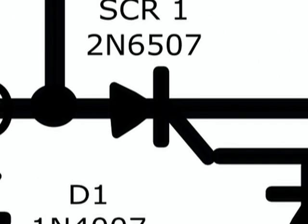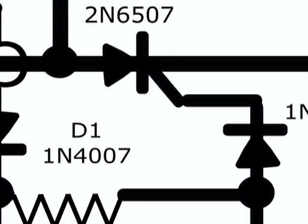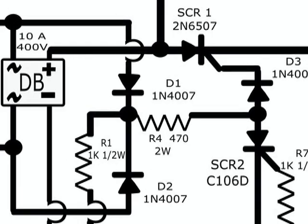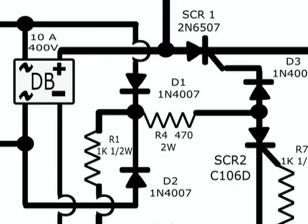SCR1 control rectifier is in conduction mode because its gate is receiving positive DC pulses from the cathodes of diodes D1 and D2 which trigger SCR1. Diodes D1 and D2 are needed to prevent the DC voltage coming from the battery,